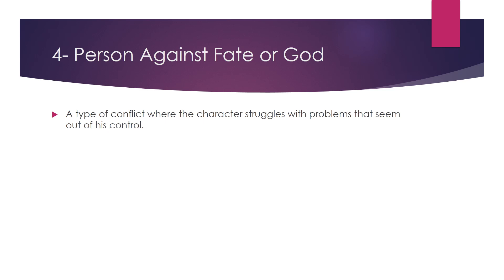Number four: person against fate or God. It is a type of conflict where the character struggles with problems that seem out of his control. This is a very interesting type of conflict where the character tries to change his fate, to challenge the decisions of some supernatural power or God. He tries to change those challenges and decisions that are created by fate. This type of conflict is the greatest because God and fate are concepts greater than anything in our imagination.